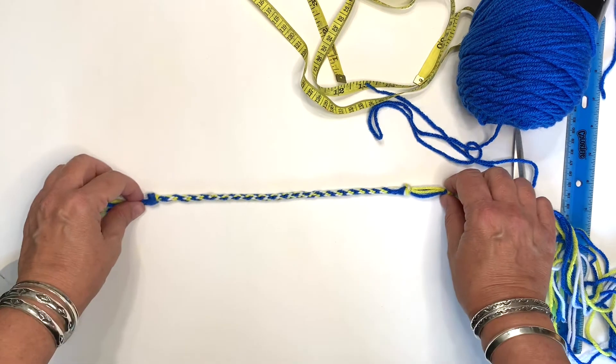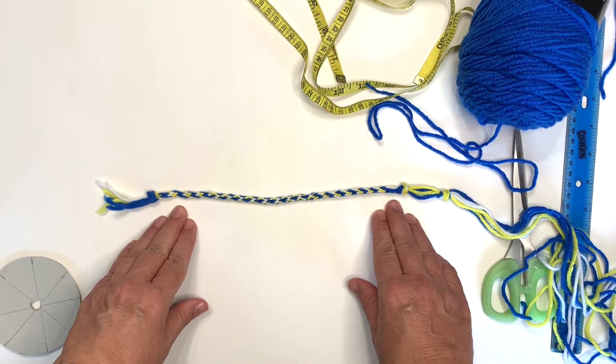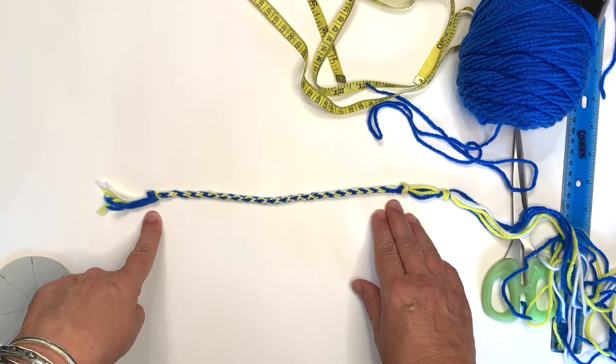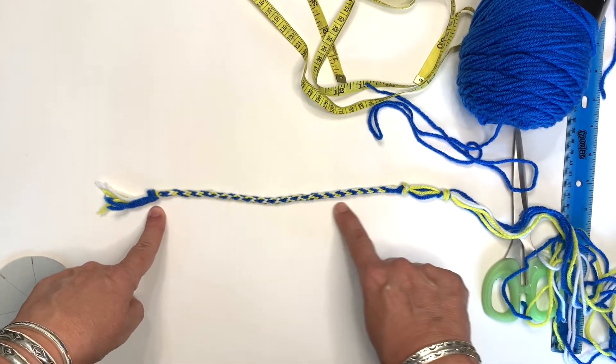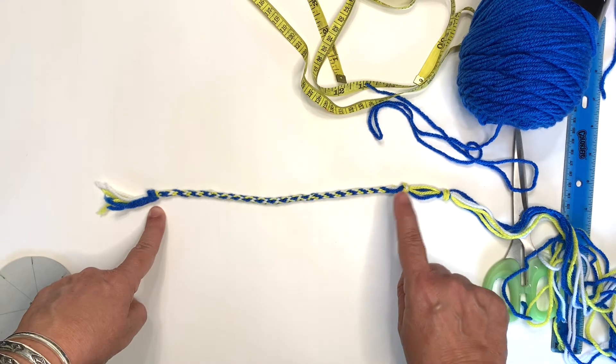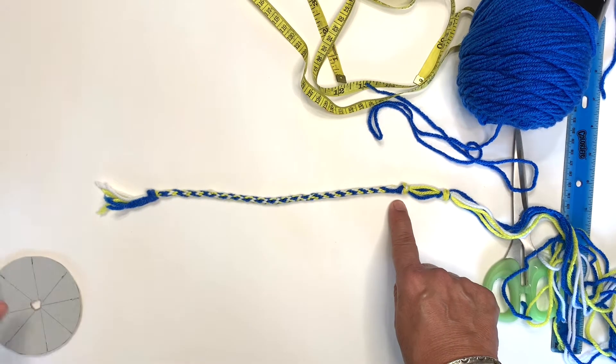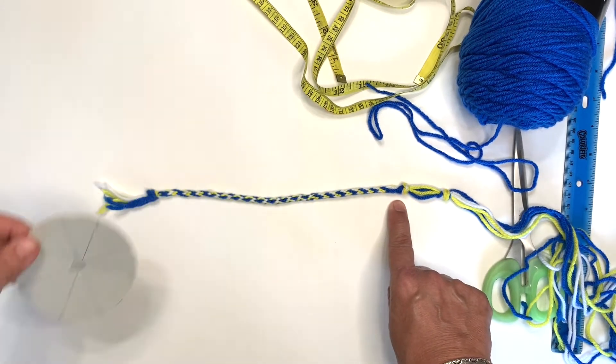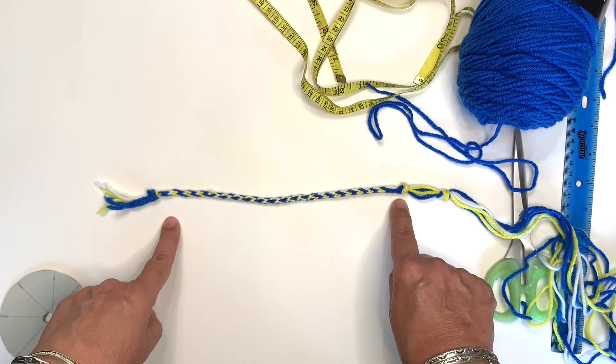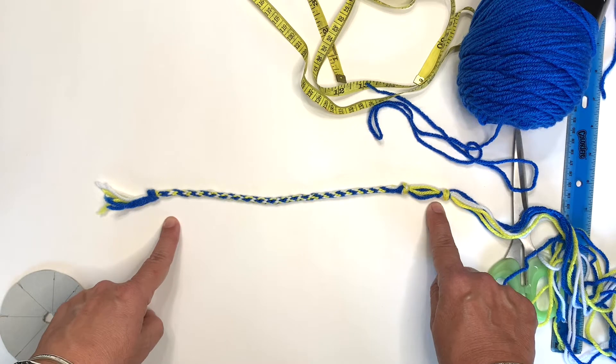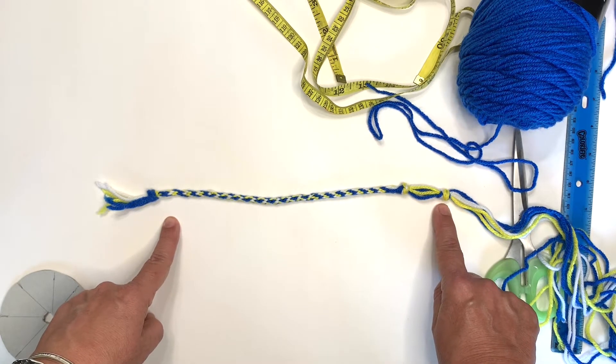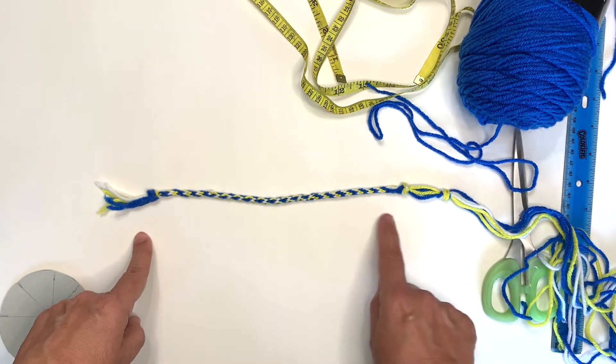So here we have our kumihimo bracelet. This is the first knot that we put in at the very beginning. Then we worked our kumihimo. Then we pulled it out of the cardboard loom and made a second knot. We measured about an inch and made another knot. So now there are three knots.